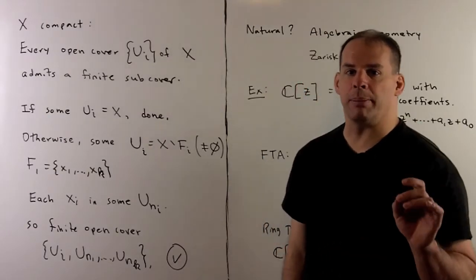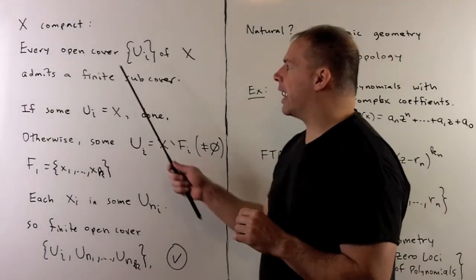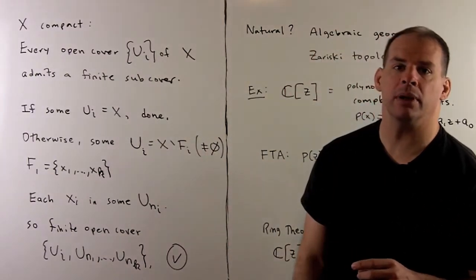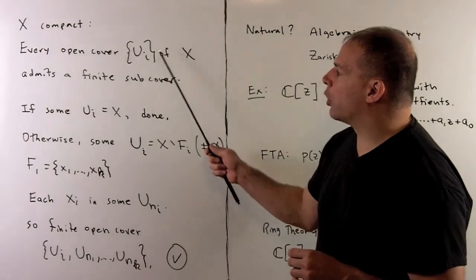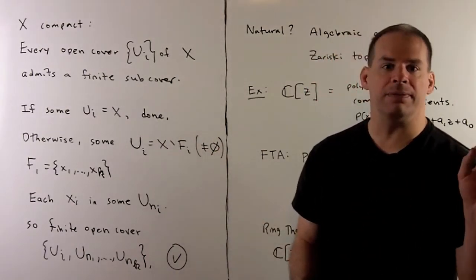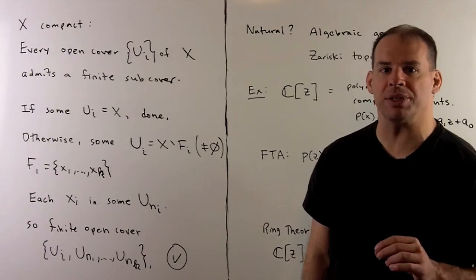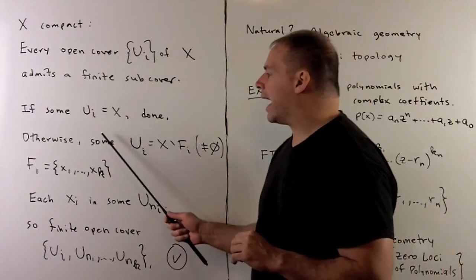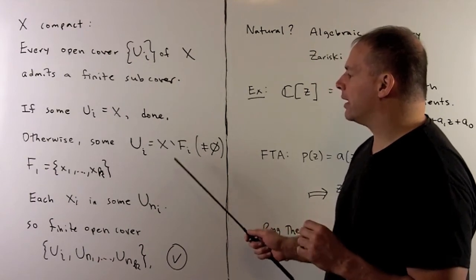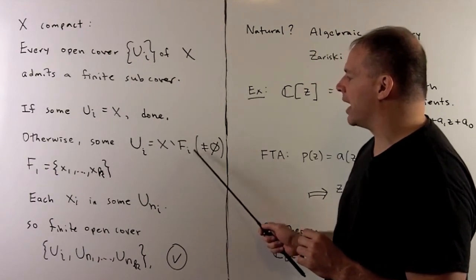To show that X is compact, we need to show that every open cover u_i of our space admits a finite subcover. If one of our open sets is the space itself, we're done. Then our finite subcover has exactly one open set in it. Otherwise, we'll have some non-empty u_i. So we'll call that the complement of the finite subset f_i.